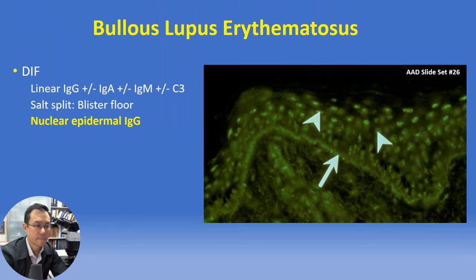In addition to linear or linear-granular deposition along the epidermal basement membrane zone suggesting bullous lupus or a lupus band, an additional ancillary diagnostic clue in DIF specimens is speckled nuclear epidermal IgG, which is associated with mixed connective tissue disease as well as lupus and occasionally other connective tissue disorders.